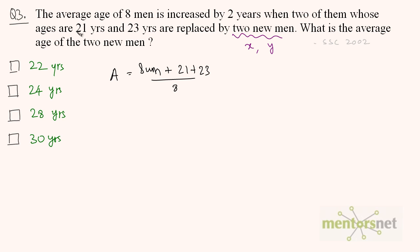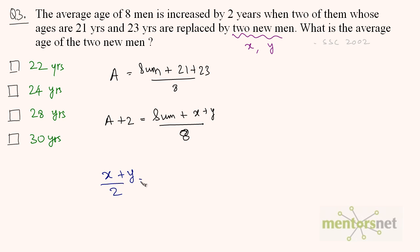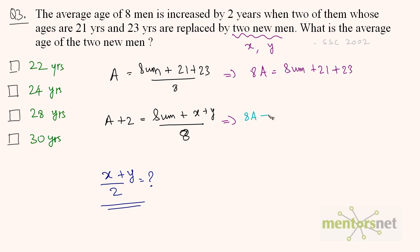If we replace the ages 21 and 23 by X and Y, the average increases by 2 years. So A plus 2 equals the sum of the rest of the 6 men plus X plus Y, divided by 8. Moving 8 to the left: 8A equals sum plus 21 plus 23. And for the second equation: 8 times (A plus 2) equals 8A plus 16, which gives sum plus X plus Y.